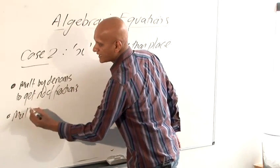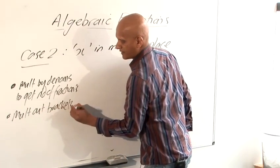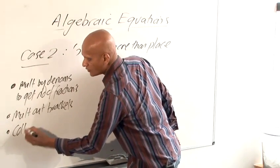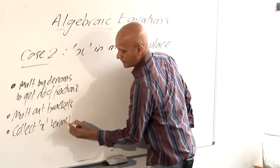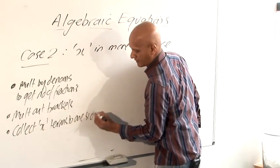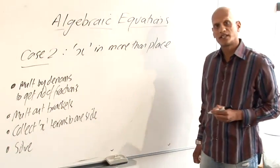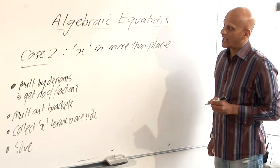Then we want to multiply out any brackets, getting rid of any brackets that are in the equation. Then we want to collect all the x terms to one side. And then once we've done that, we should be able to solve it by rearranging it in the same way as we did before. So I'm going to give you a different example here for case 2.